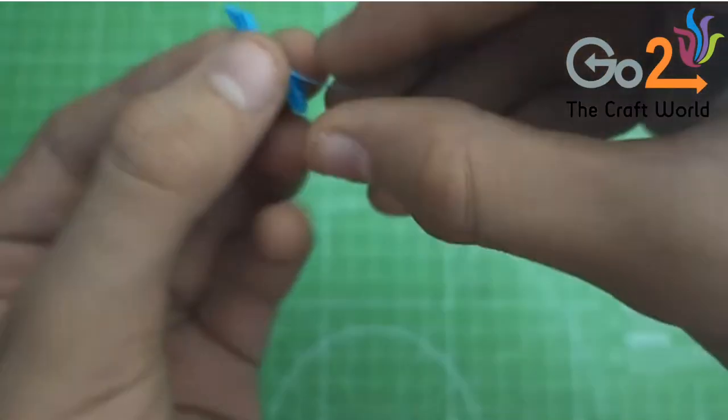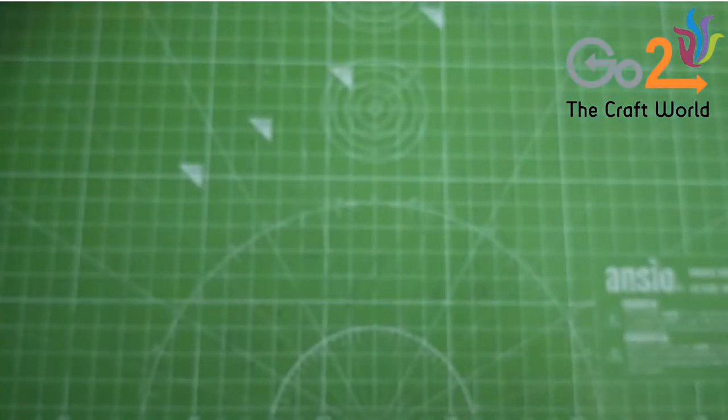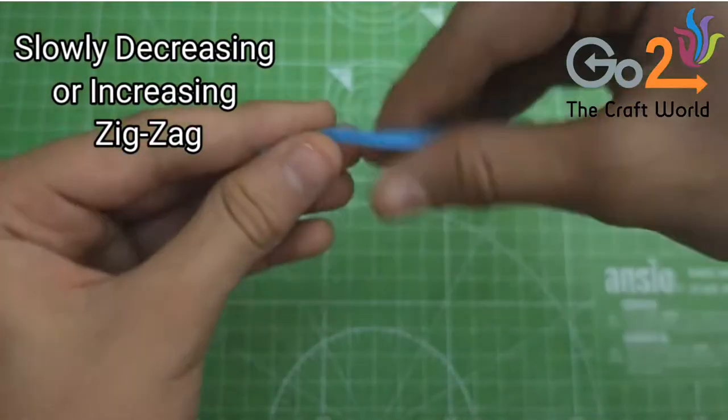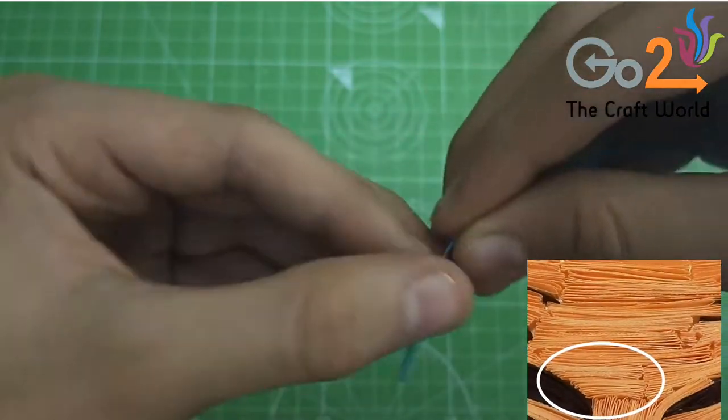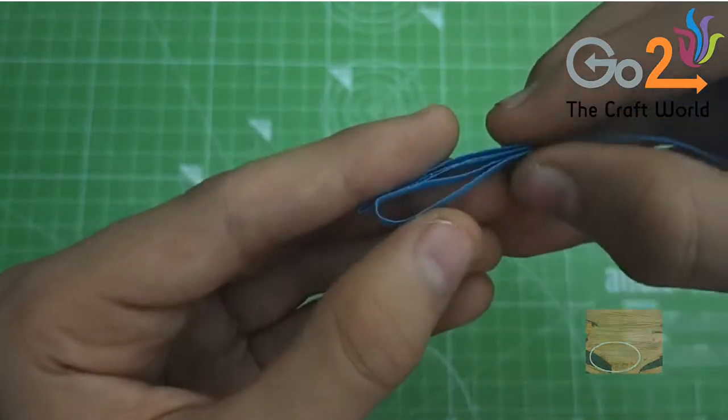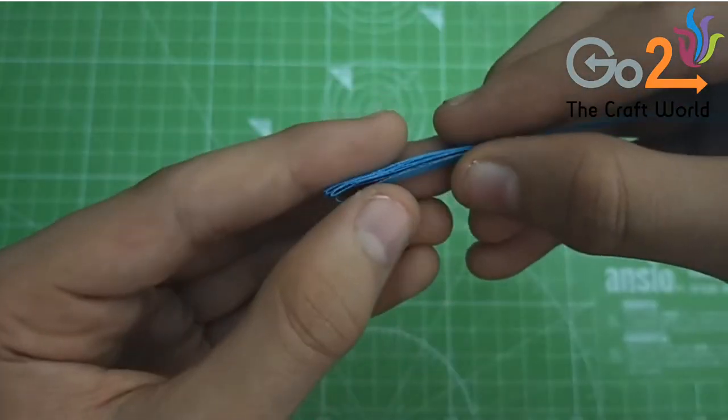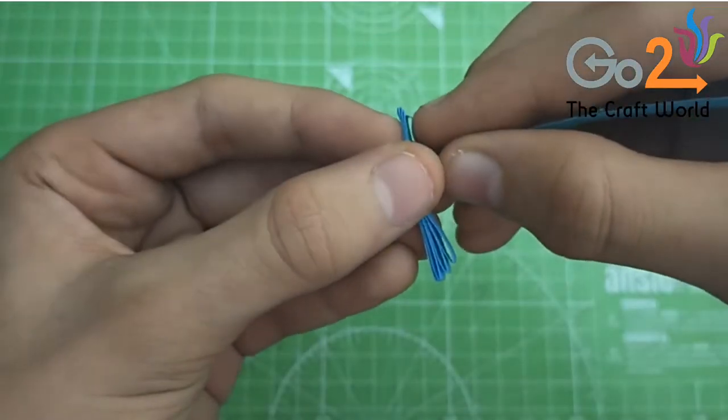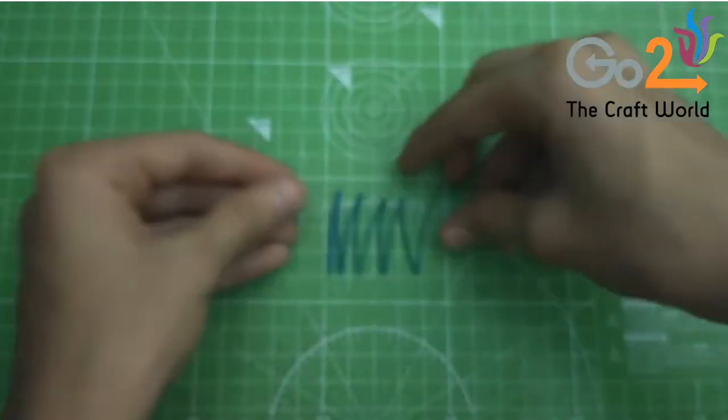It will look like this after completing. Now we will learn slowly decreasing or increasing zigzag. When you have to slow down your slope for the increasing or decreasing zigzag, then with the gap of two or three folds, you start decreasing the length of the folds.